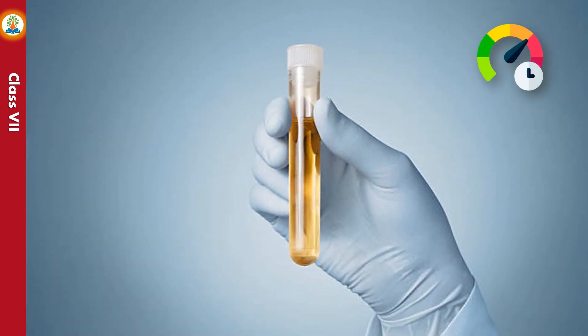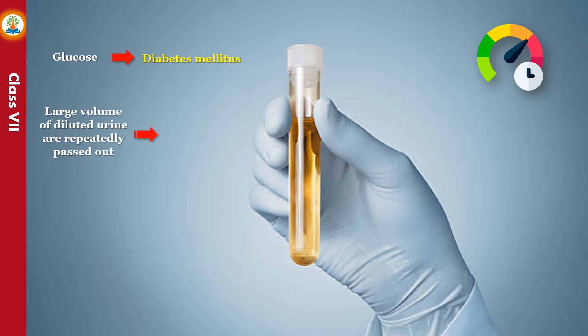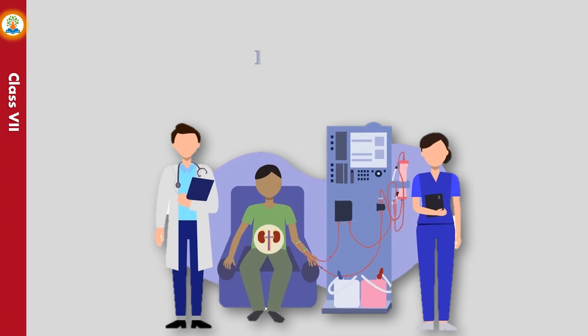Sometimes the presence of abnormal constituents in urine indicates that a person is suffering from some disease. When glucose is present in urine, it indicates diabetes mellitus. When large volumes of diluted urine are repeatedly passed, the disease could be diabetes insipidus. When blood is present in urine, it indicates some tumor, infection, or damage of kidneys. Hence urine also acts as an indicator of other illnesses. In case of damaged kidneys, an artificial kidney or dialyzing machine is used to maintain normal levels of water and minerals and to clean the blood of metabolic wastes — this process is called dialysis.